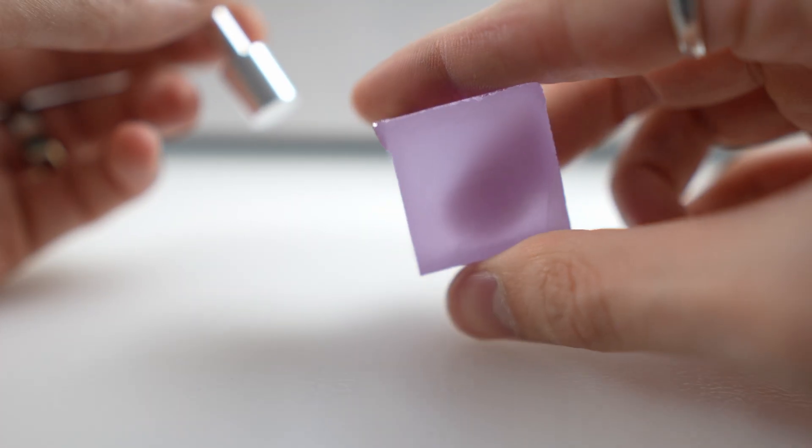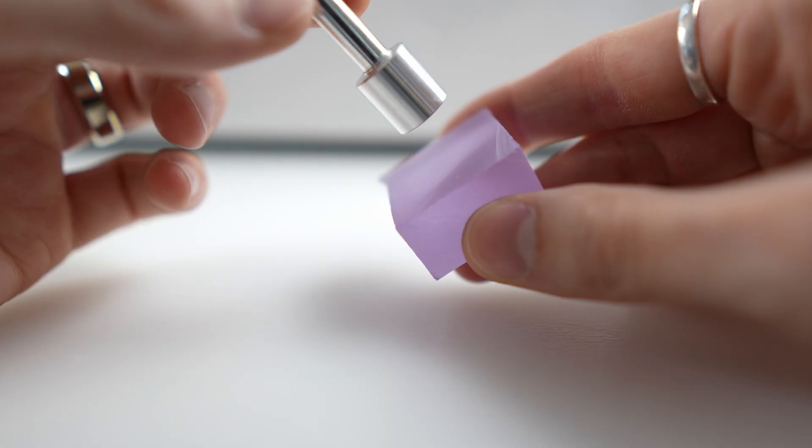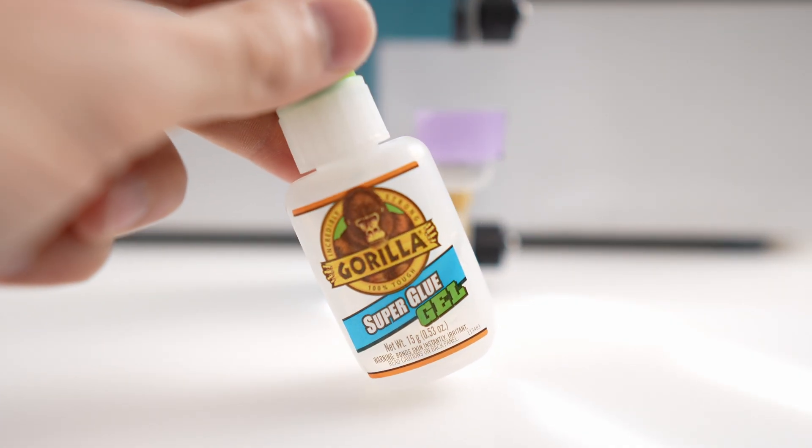Okay, now that we have it in a more workable shape, we will need to attach a dop stick to it. Next we will need some super glue.